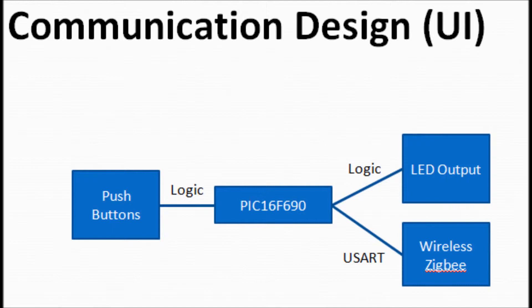For the user interface, we have five push buttons that send logic commands to the PIC F690, which outputs those logic commands to LED output. There is a UART communication protocol that is a custom, customizable protocol. The user interface has a wireless Zigbee that is getting data using UART and communicating with our main processor. There is a receiver at the main processor and a transmitter on the user interface.